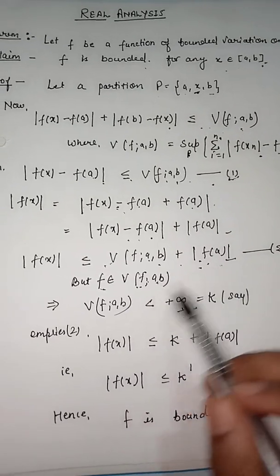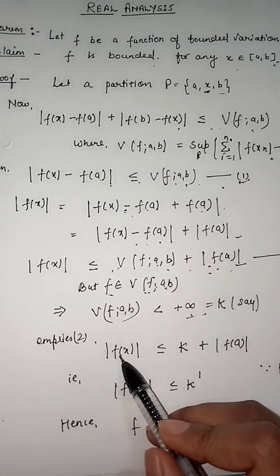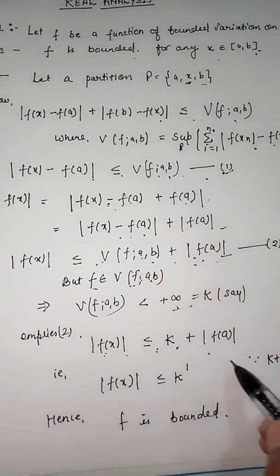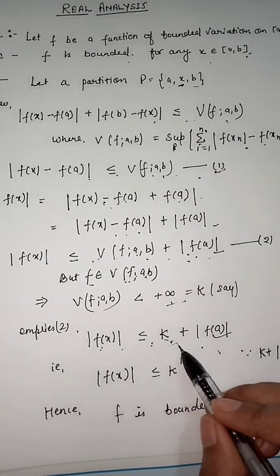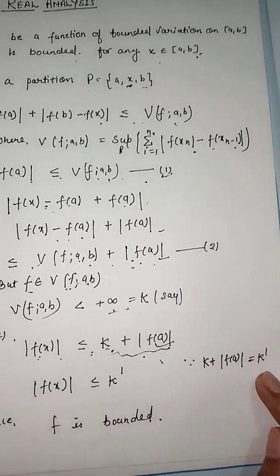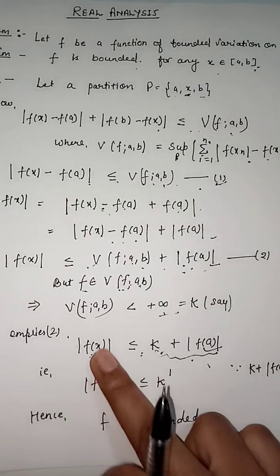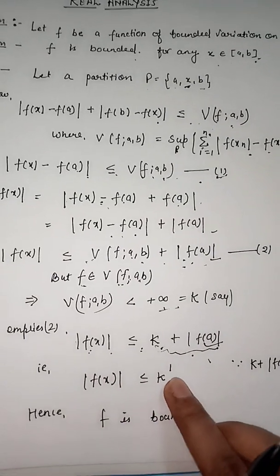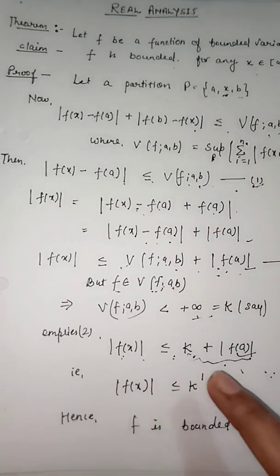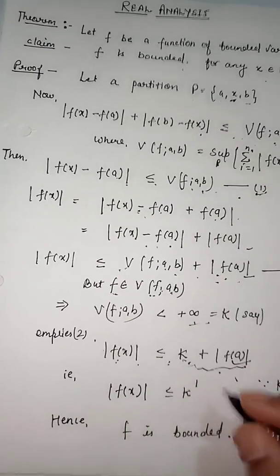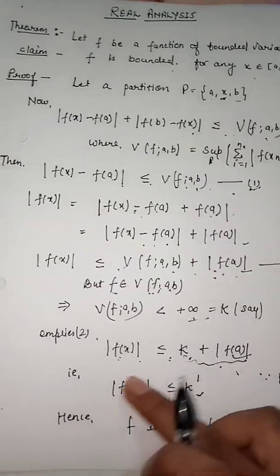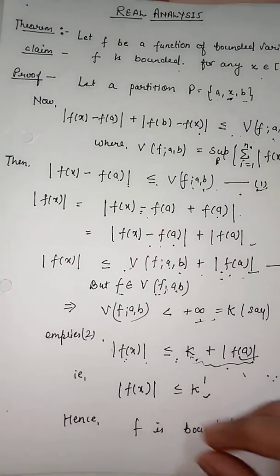This implies |f(x)| < K + |f(a)|. We can denote this finite number as K', where K' = K + |f(a)|. So |f(x)| < K', meaning the function f is bounded by the finite number K'. Hence the function f is bounded.